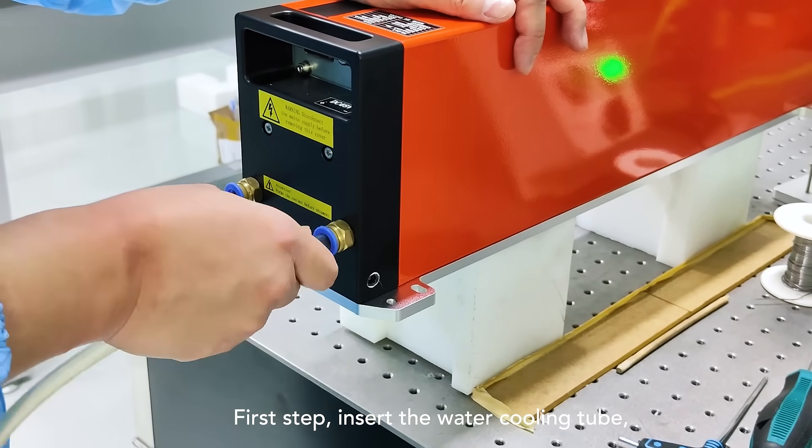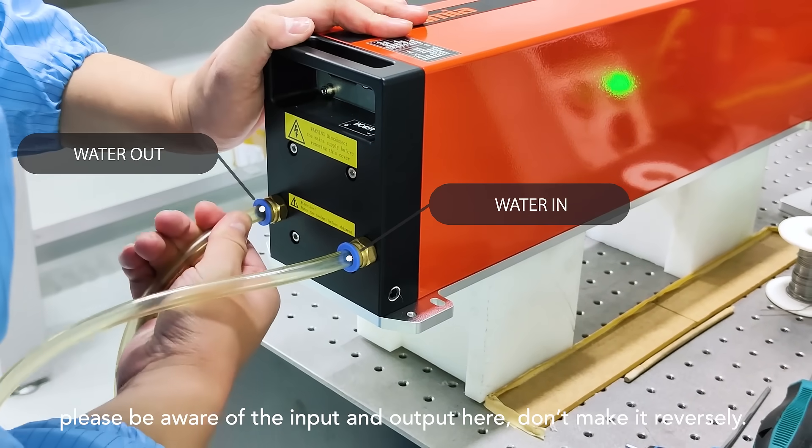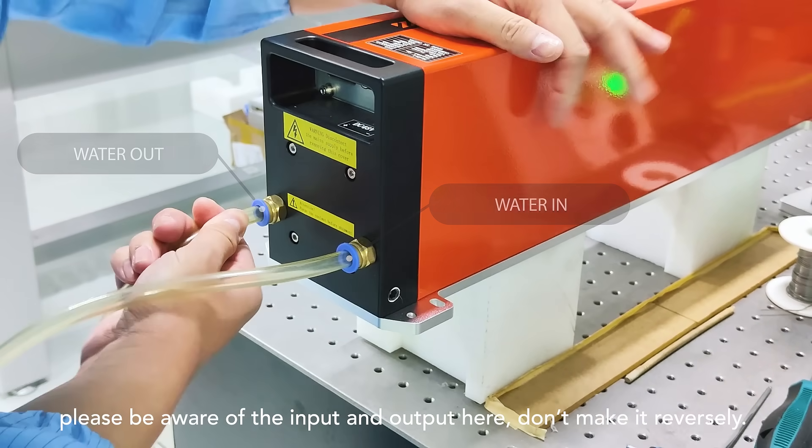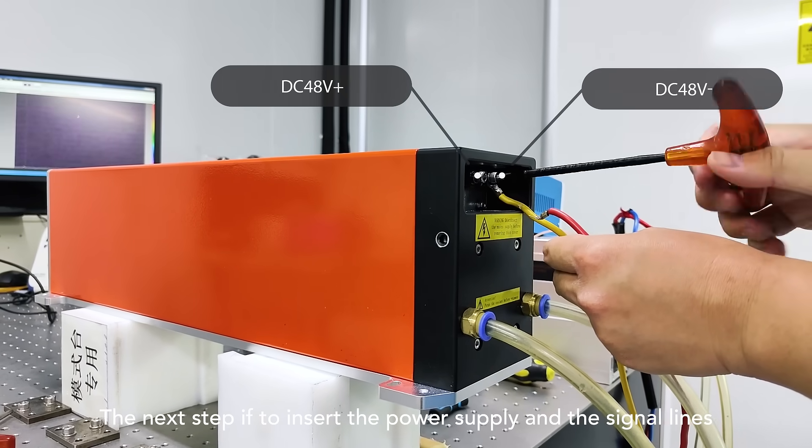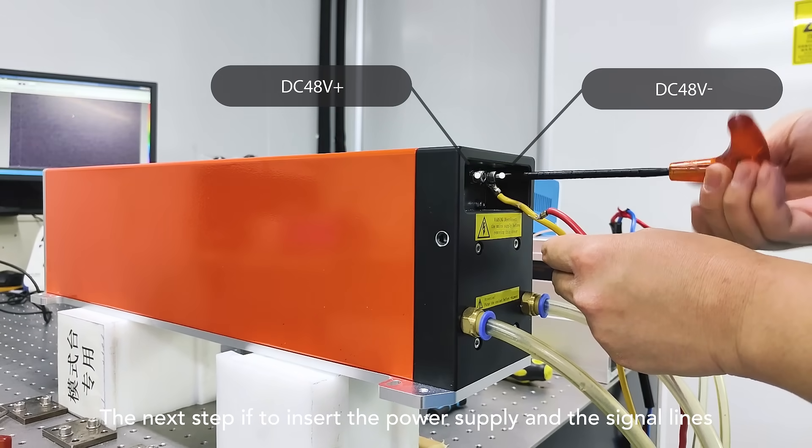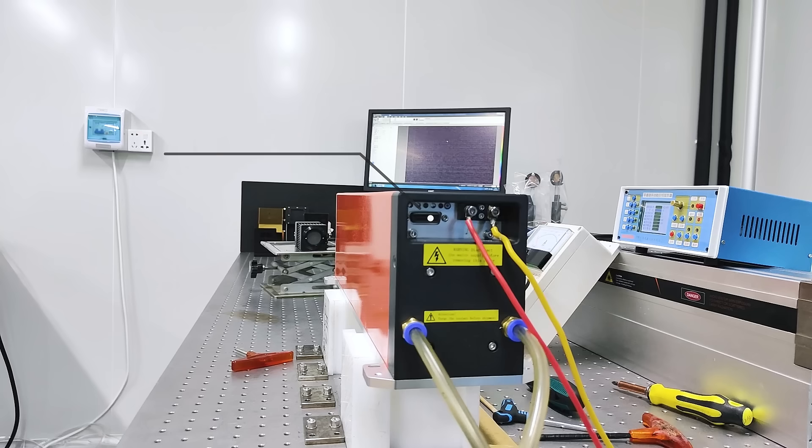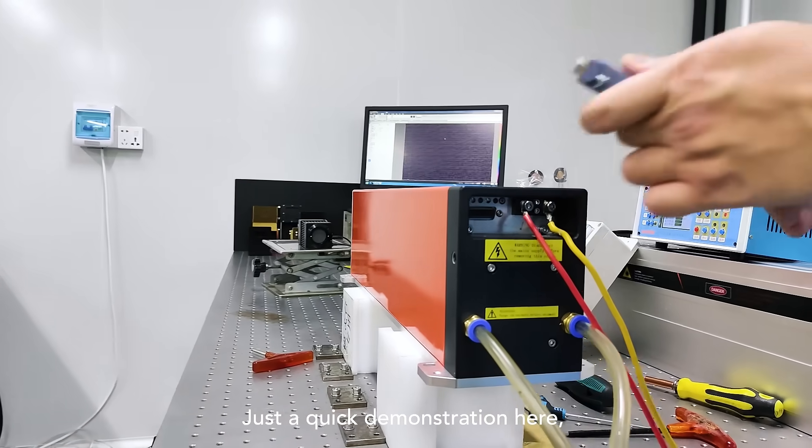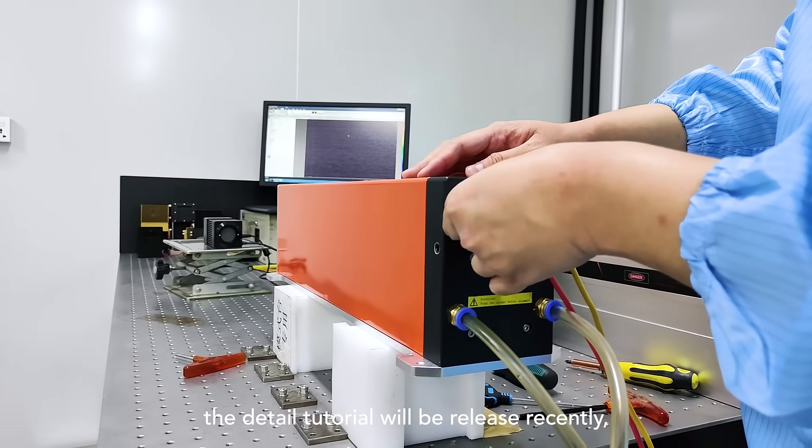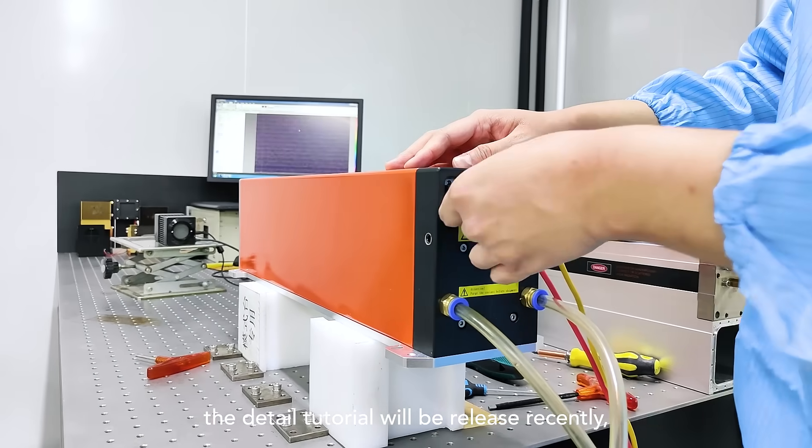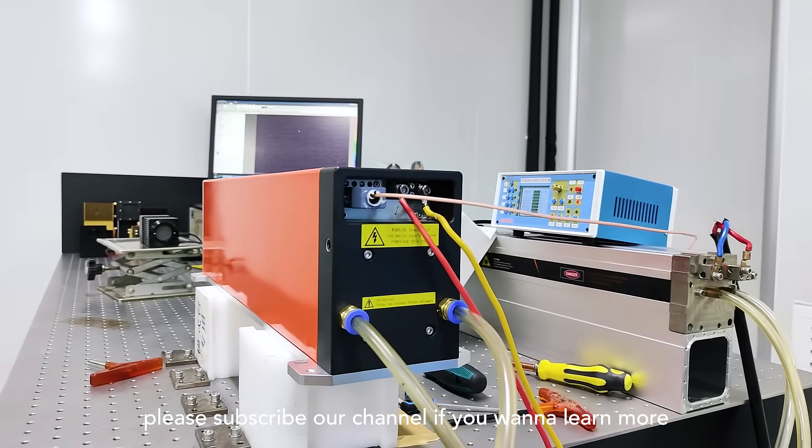First step, insert the water cooling tube. Please be aware of the input and output here, don't make it reversely. The next step is to insert the power supply and the signal lines. Just a quick demonstration here. The detailed tutorial will be released recently. Please subscribe to our channel if you want to learn more.